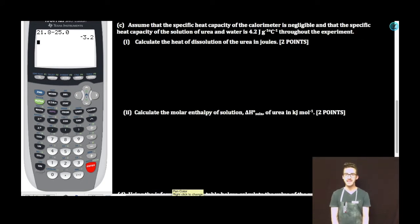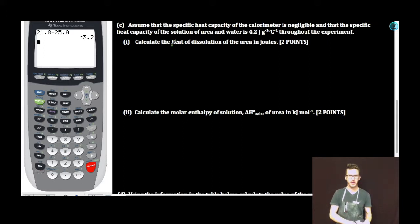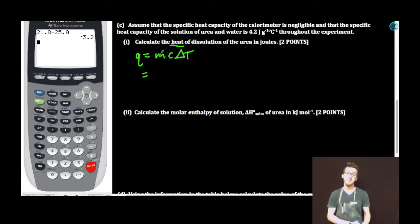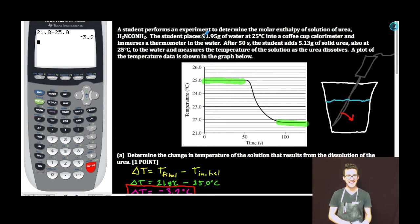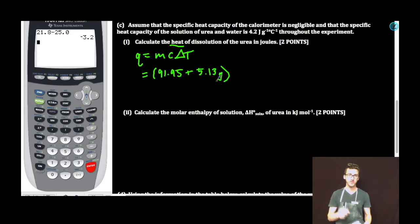Part C, subpart I: Calculate the heat of dissolution of the urea in joules. If we're thinking about calculating heat, we should be thinking q = mcΔT. The most commonly missed part: if we take 91.95 grams of water and add 5.13 grams of solid urea, the mass of our solution is the combined mass of the water and the urea, and that's the value we're going to want to use in this calculation. Our specific heat of the solution, we're told to use 4.2 joules per gram degrees Celsius.